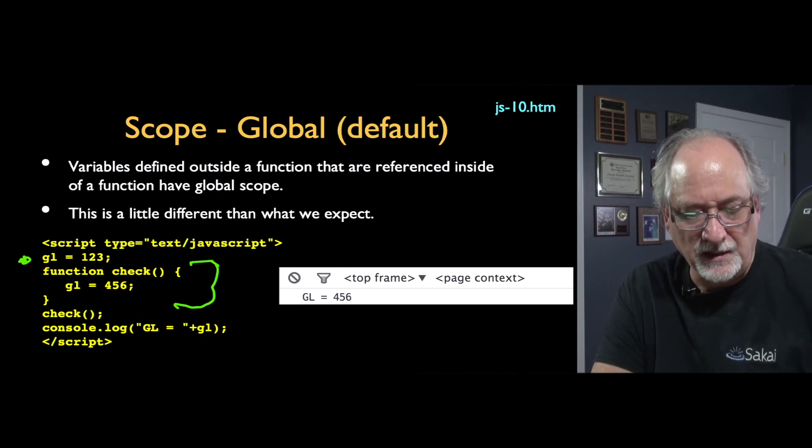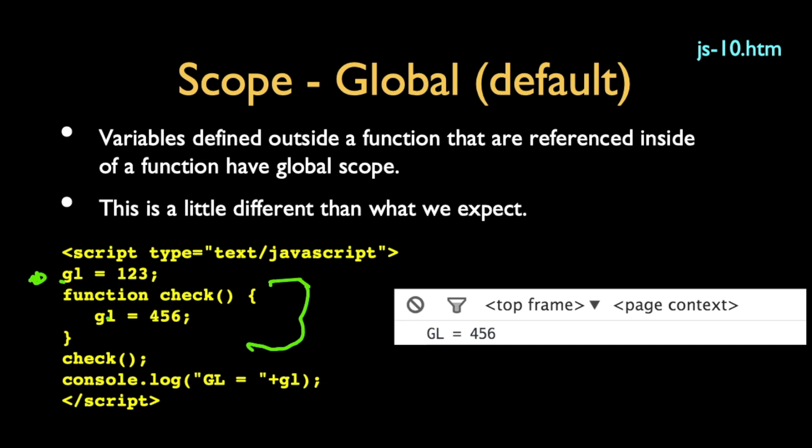And so by default, these two are the same. I'm not really familiar with a lot of other programming languages where the default is that that's kind of a global variable. In this case, I'm defining the global variable before, and I say nothing special about gl, and so it's global. I set it to 123, then I call this function and it sets it to 456, and when we come back from the function, it's 456. So that's kind of weird.